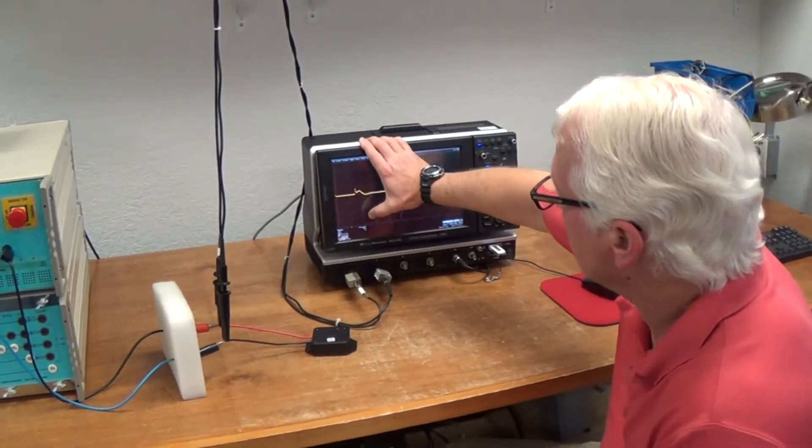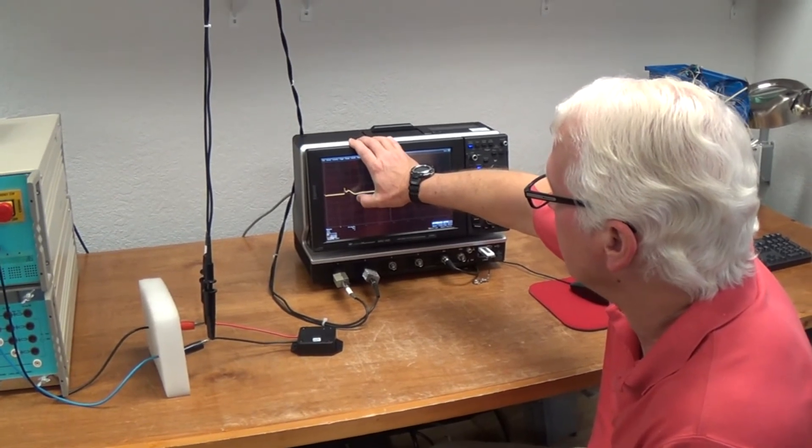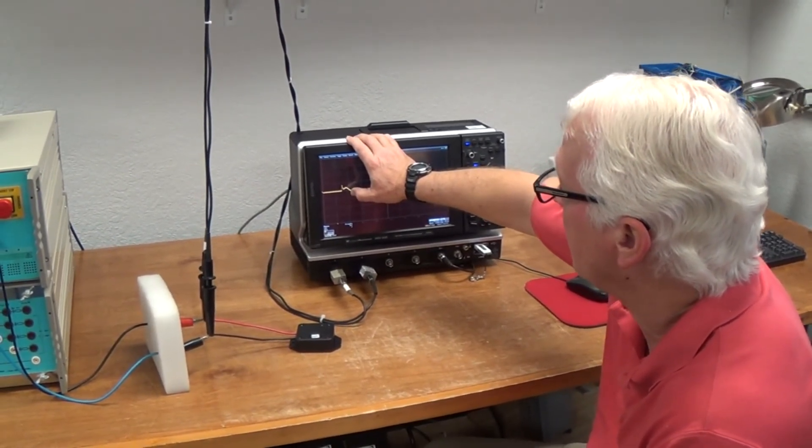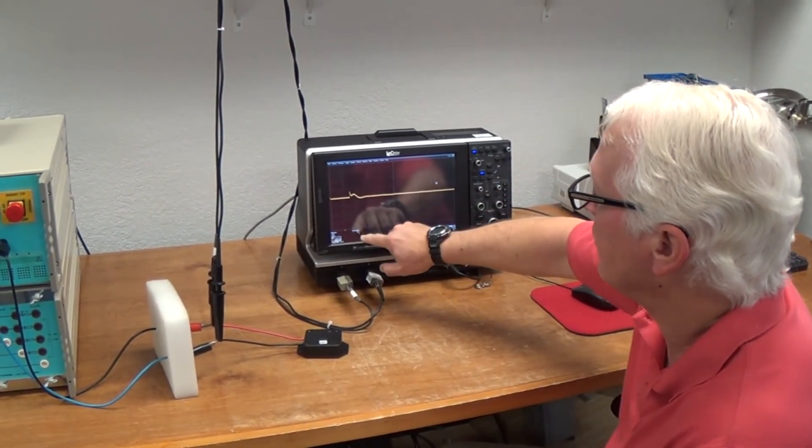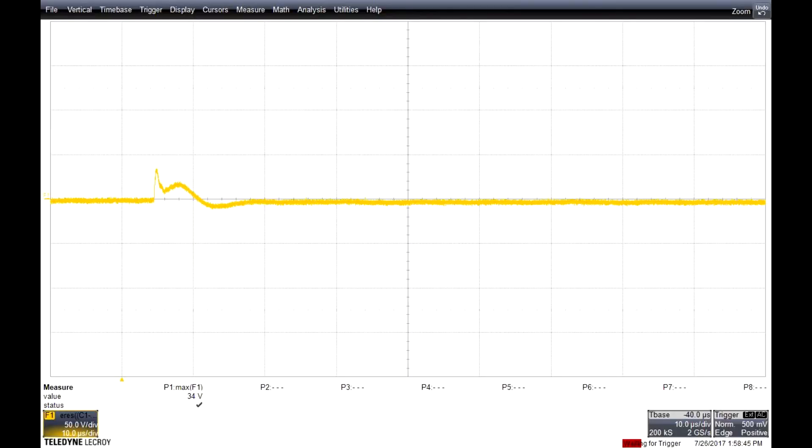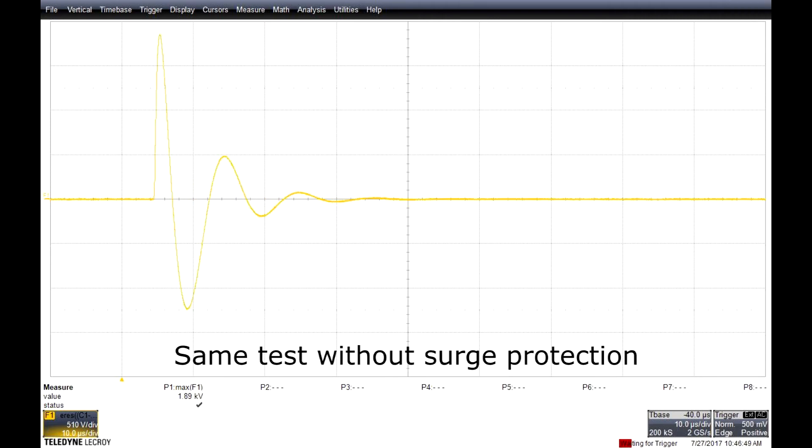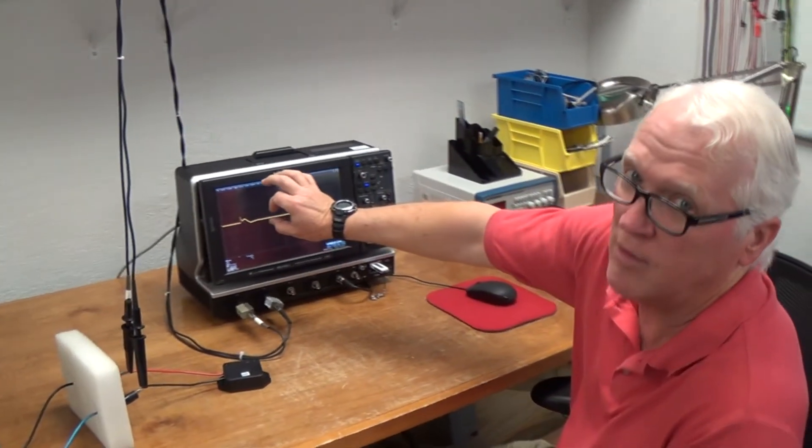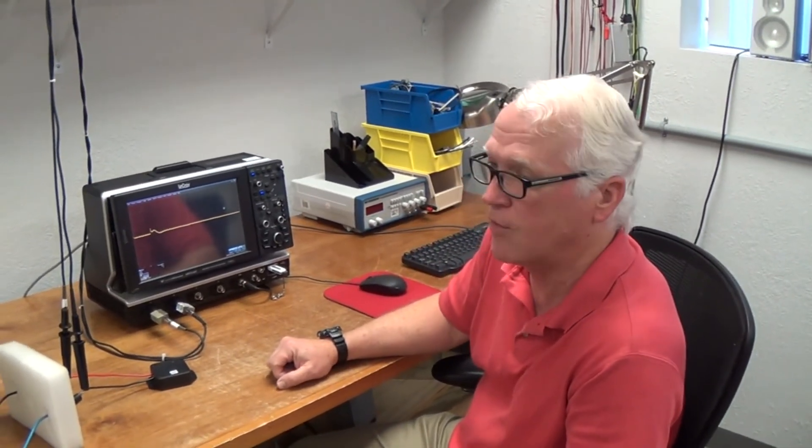So here's your surge. That surge would have gone to 2,000 volts. But what's left over is 34 volts. This is knocked down way below the level that's going to harm anything, any of your equipment.